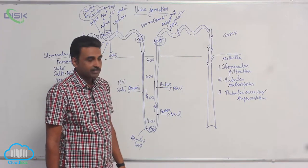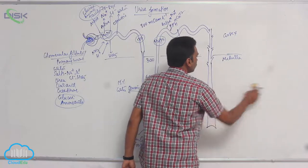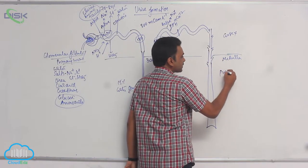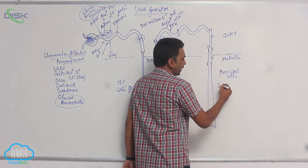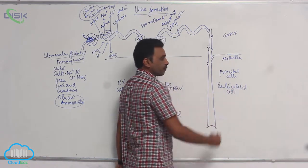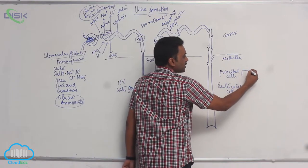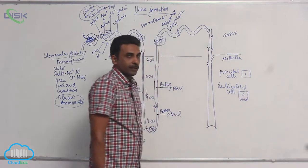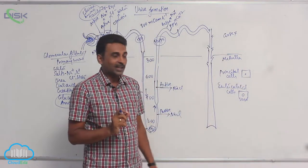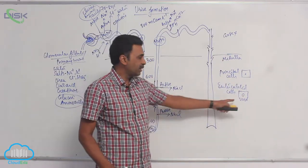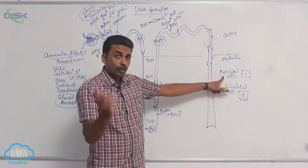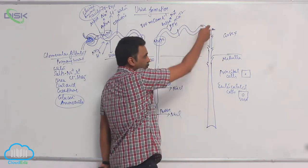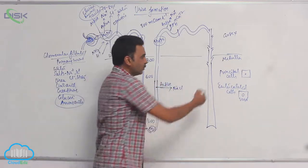In the terminal region of the distal convoluted tubule and in the collecting duct, there are two different types of cells: principal cells and intercalated cells. Principal cells are simple cuboidal epithelium without a brush border (microvilli), while intercalated cells are simple cuboidal epithelium with a brush border. Principal cells are more in number compared to intercalated cells.